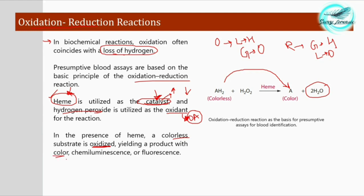In the presence of heme, the colorless substrate is oxidized to yield a product with a color, chemiluminescence, or fluorescence — as discussed in detail in the previous video series on chemical enhancement procedures for blood. As shown in the diagram, in the presence of hydrogen peroxide as the oxidizing agent and heme as the catalyst, the substrate is converted into a colored product. This is the basic principle of the preliminary examination of blood.